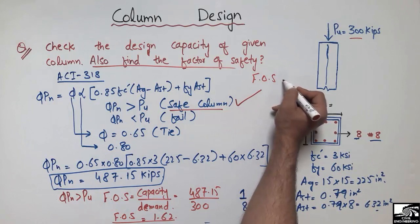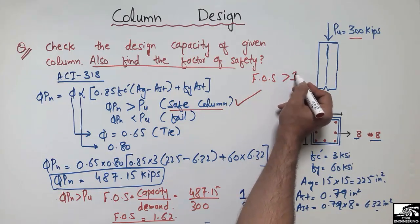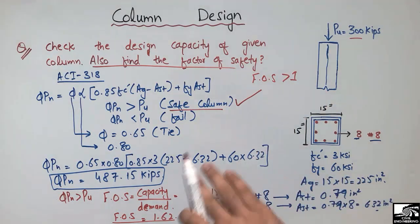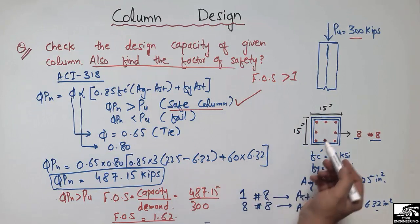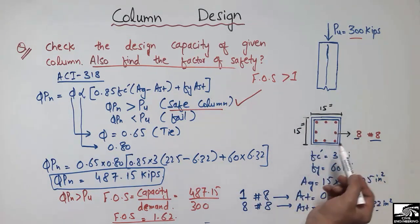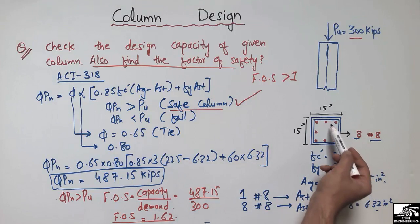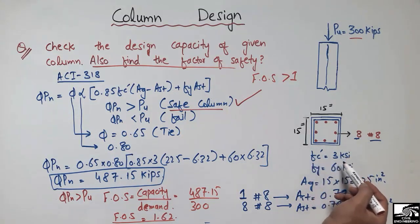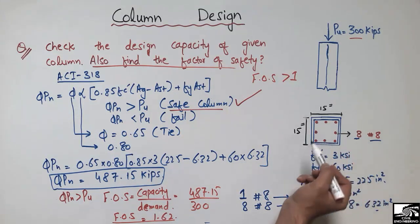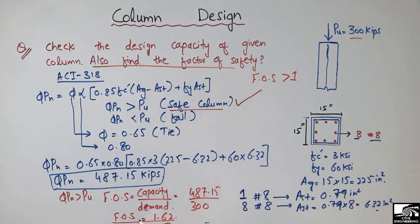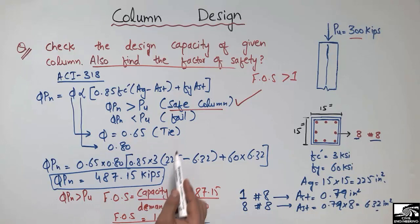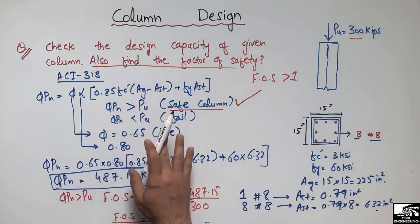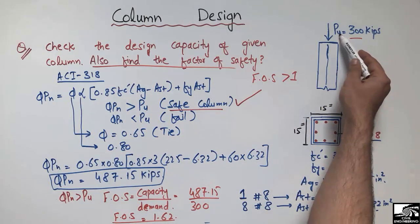Our column is safe because the factor of safety is greater than 1. If the factor of safety is equal to or less than 1, we must increase the capacity of the column — by increasing the cross-sectional area, providing more steel bars, or increasing the concrete strength. Here our factor of safety is already 1.62, so no changes are needed. The column can safely take the 300-kip load.